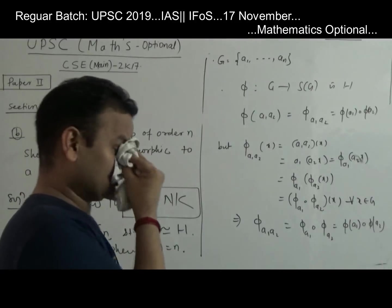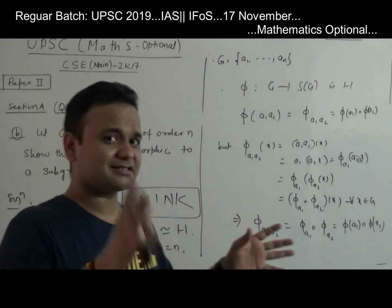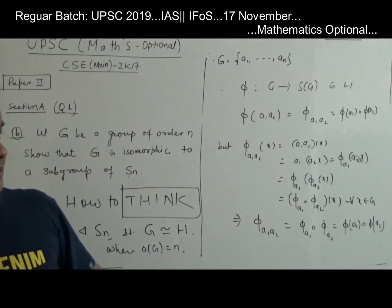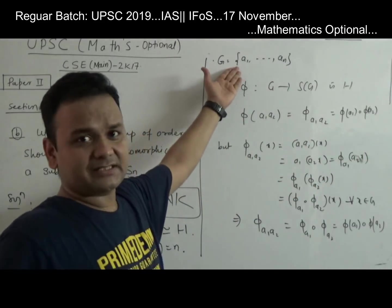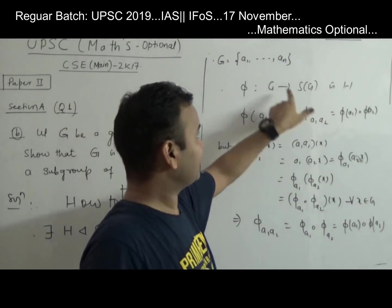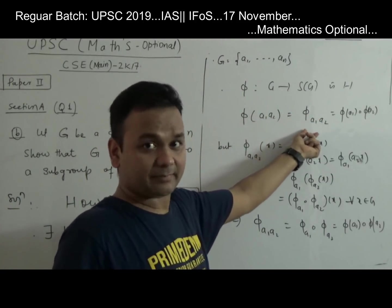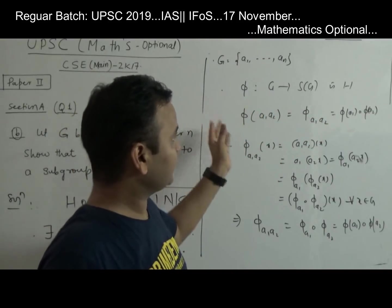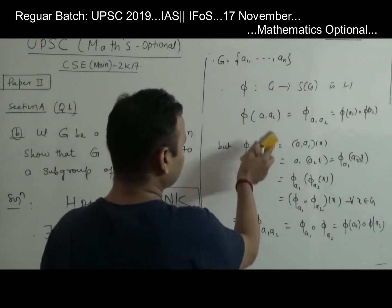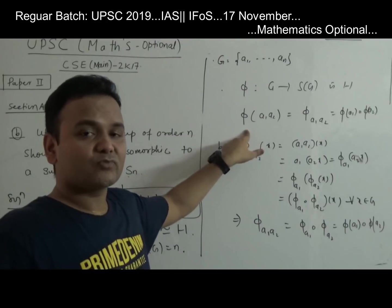That implies Φ(a₁a₂) = Φ(a₁) ∘ Φ(a₂). So what we have proved is that Φ preserves the group operation — Φ is a group homomorphism. These are the small things you should know. If you don't know, it's not a big deal — you should learn. That's the only way. And for learning, we need interest in the subject, because they are going to ask very simple questions.